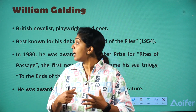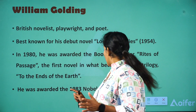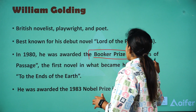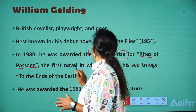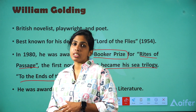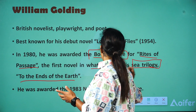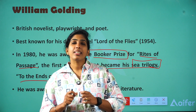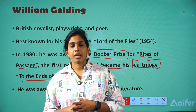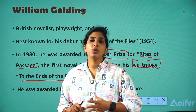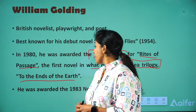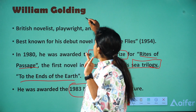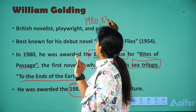In 1980, he was awarded the Booker Prize for Rites of Passage, the first novel in what became his sea trilogy To the Ends of the Earth. He is very famous for his sea trilogy. Trilogies are important as there are a lot of exam questions on them. He won the Booker Prize in 1980 and was awarded the 1983 Nobel Prize in Literature — a three-year difference.